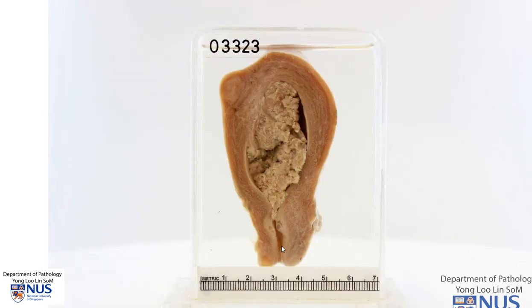In summary, this is a case of endometrial carcinoma showing a friable yellowish tumor that is expanding the endometrial cavity and also invading into the superficial myometrium. Thank you.